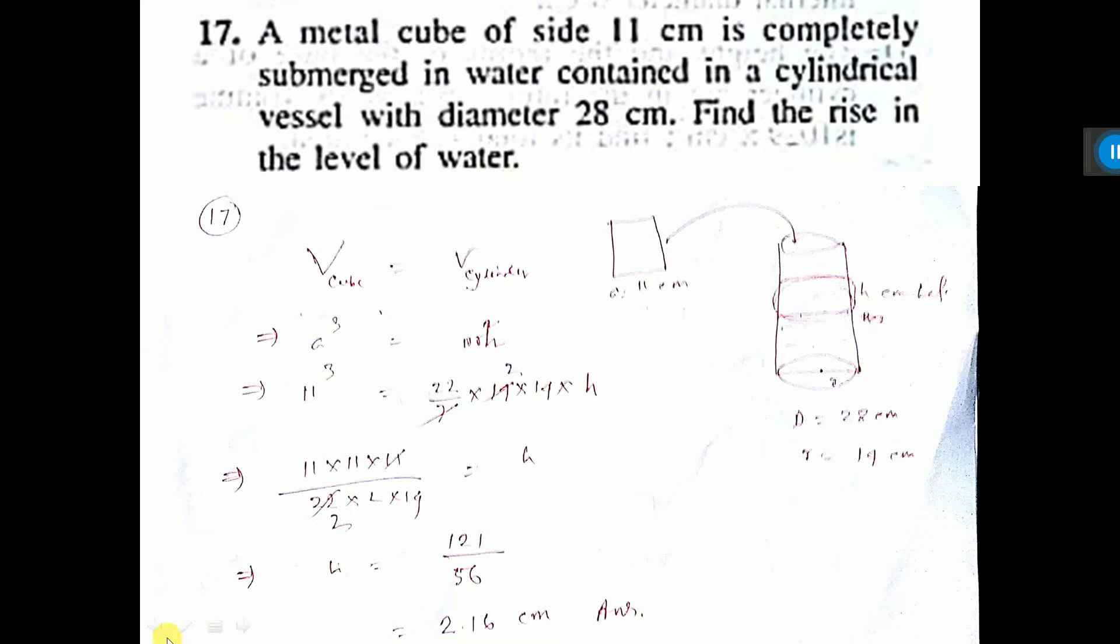So the cylinder I have drawn here, cylinder's diameter is 28 cm given. You see here diameter given. So its radius will be half of diameter, that is 24—sorry, 14 cm.